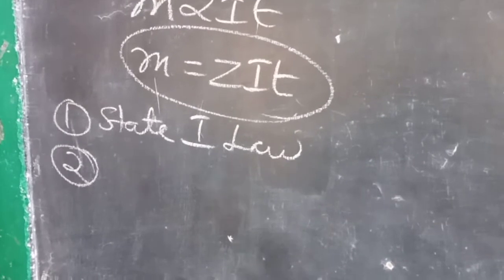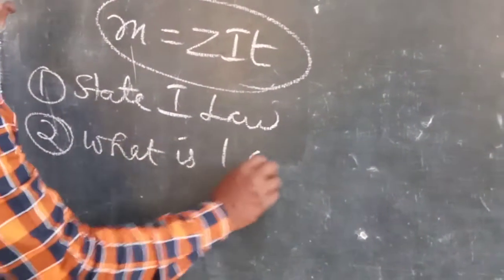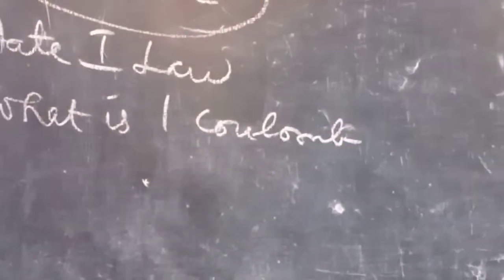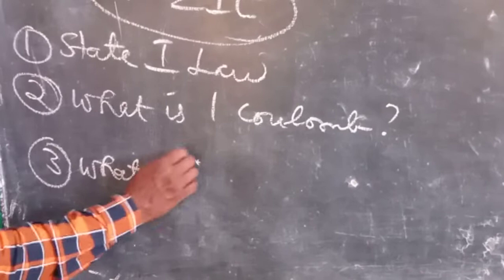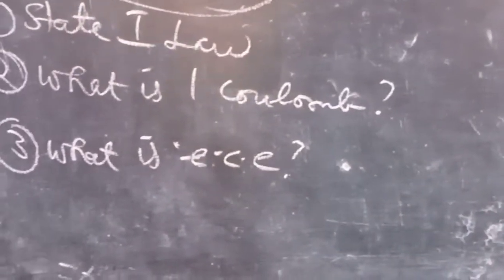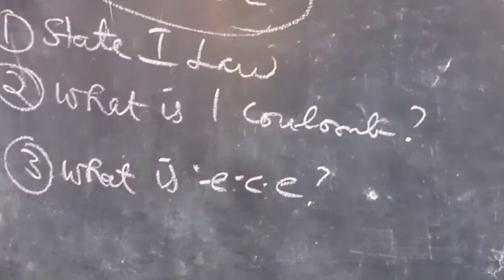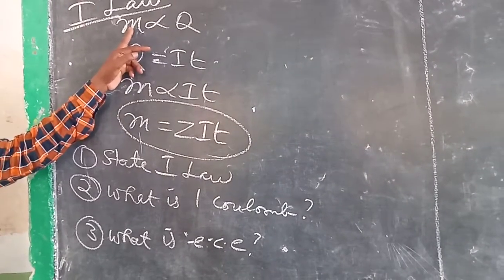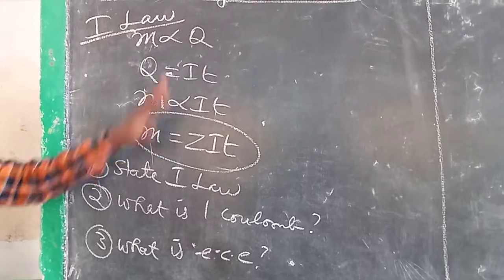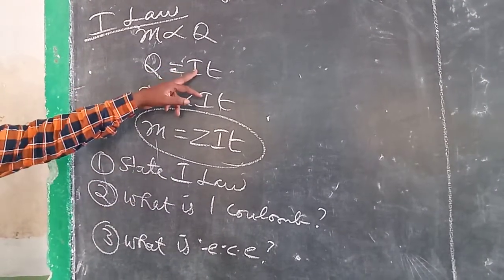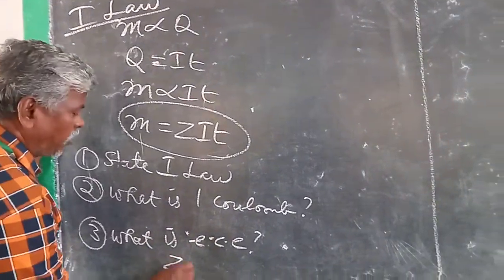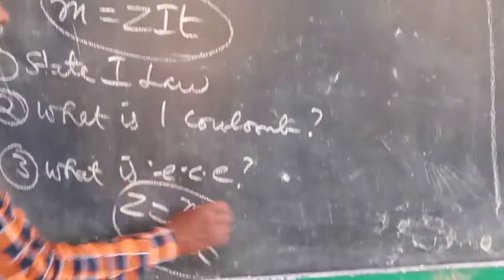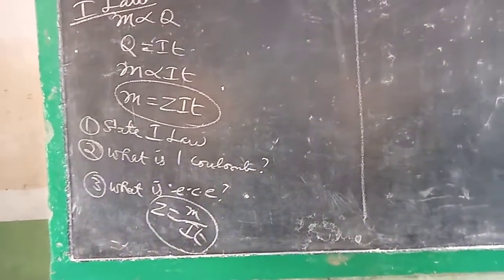Q is equal to I T. What is one coulomb? One coulomb — what is electrochemical equivalent? Electrochemical equivalent is equal to m divided by i times d. When one ampere current is passed for one second, the amount of substance deposited is equal to the electrochemical equivalent.